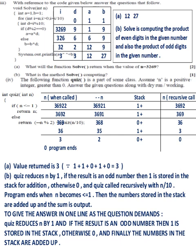Part 3: The working has been shown. Answers: A is 1227, B: Solve is computing the product of even digits in the given number and also the product of odd digits in the given number.